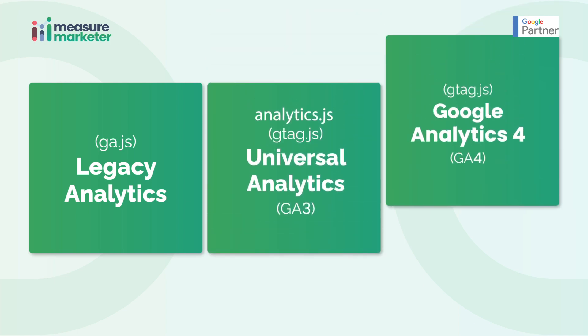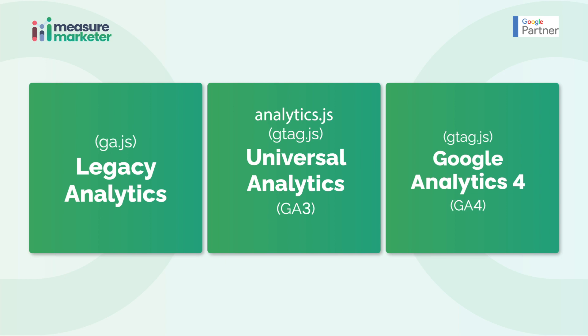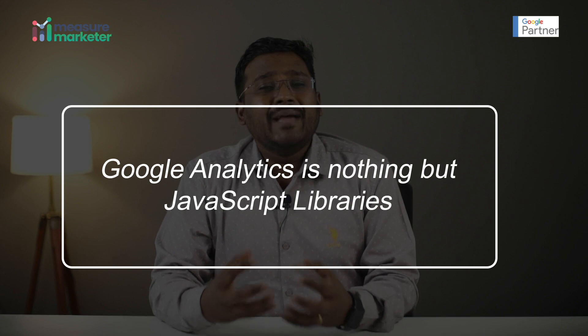You might ask: it's called GA4, but you told me only three things — Classic, Universal Analytics, and GA4 — so where is the fourth? To understand that, you need to know that Google Analytics is essentially JavaScript libraries. The first Classic Analytics was using a library called ga.js. I will show how the code looks.